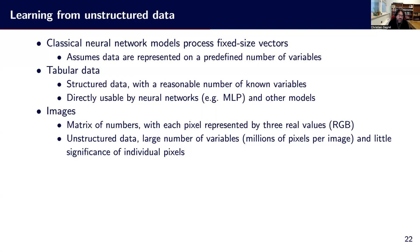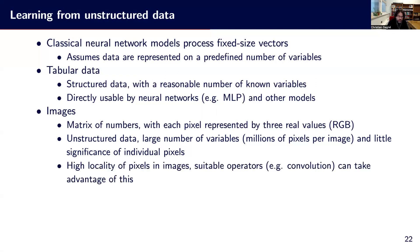We should not look at pixels individually, but treat them as having a 2D structure. This high locality of pixels in images makes it suitable for using things like convolutions, an operator that takes advantage of that locality and enables efficient processing of images.